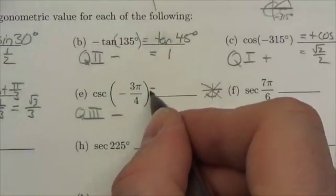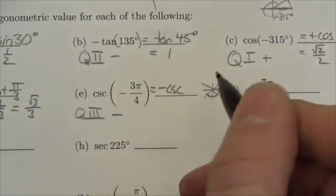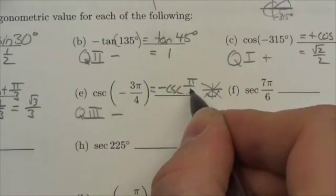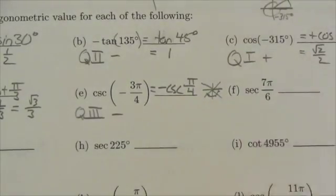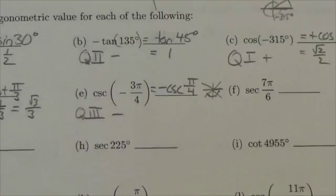So this is going to end up being the negative cosecant of pi over 4.